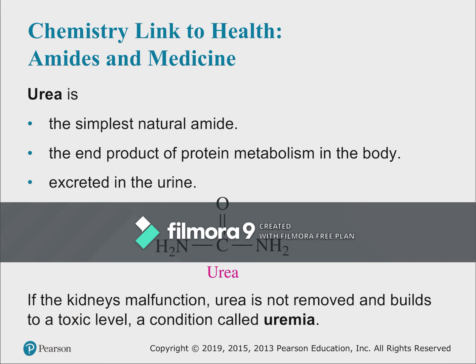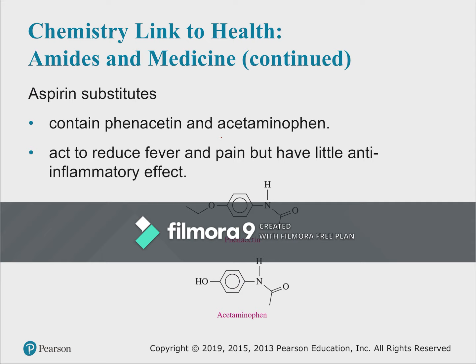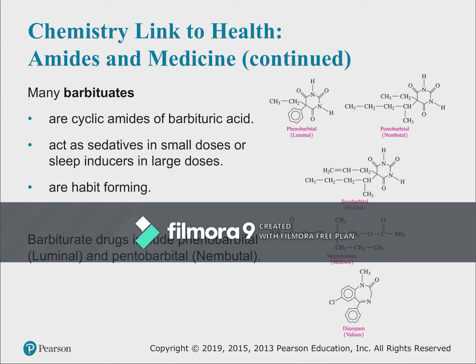Urea is the simplest natural amide found in the body — it's what nitrogen-containing compounds are broken down into when not in use. Aspirin substitutes like acetaminophen and phenacetin contain amide groups. Barbiturates are typically addictive sedatives that contain cyclic amide structures in their rings.